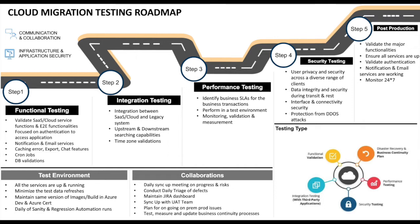The primary focus areas in migration testing are communication and collaboration with all the stakeholders, and the second is infrastructure and application safety. During the testing process, multiple steps are involved and we need to define the scope of each step, which depends on the application under test.